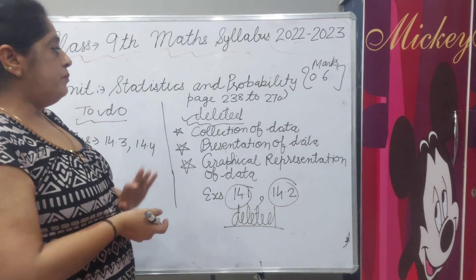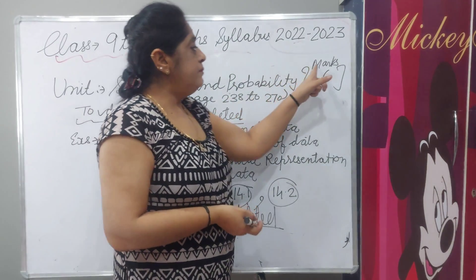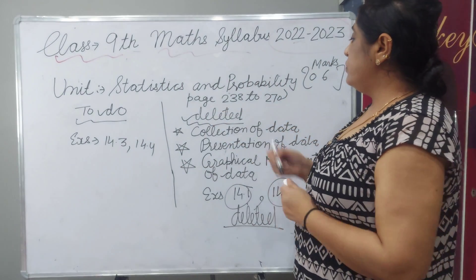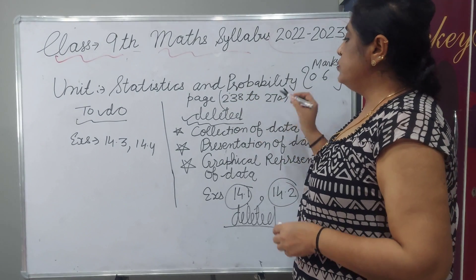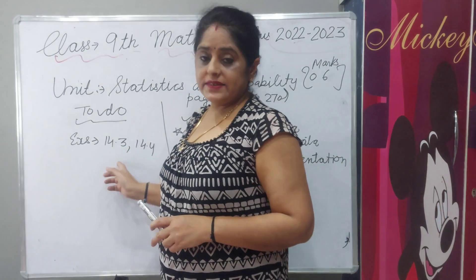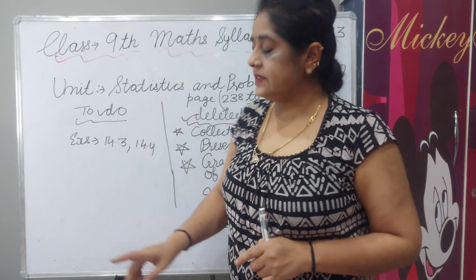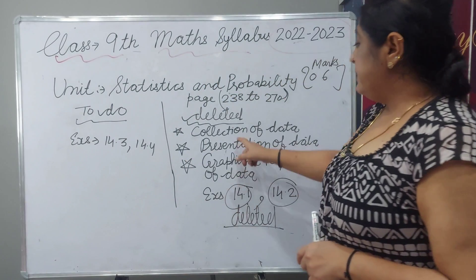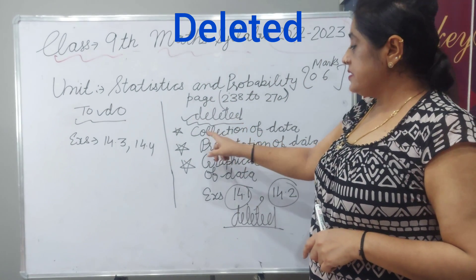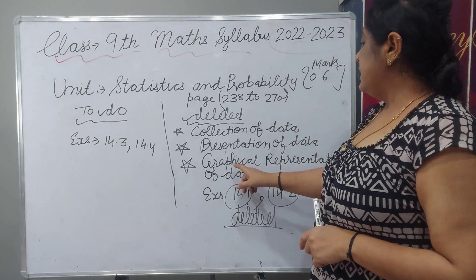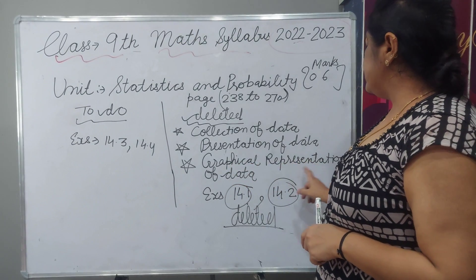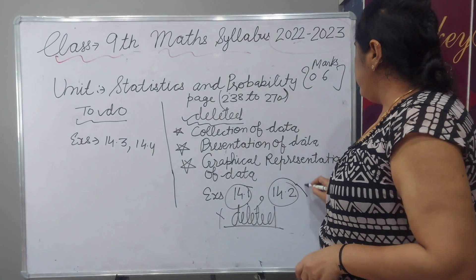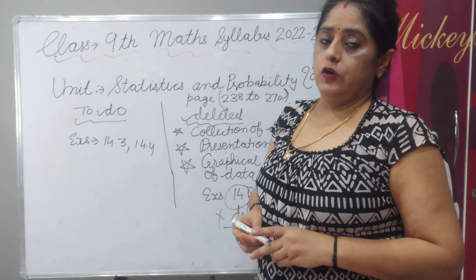Unit statistics and probability — total 6 marks paper will come. In NCERT book, page number 238 to 270. You have to do 2 exercises out of 4 total: 14.3 and 14.4. Deleted topics are: collection of data, presentation of data, and graphical representation of data — meaning exercises 14.1 and 14.2 will not come.